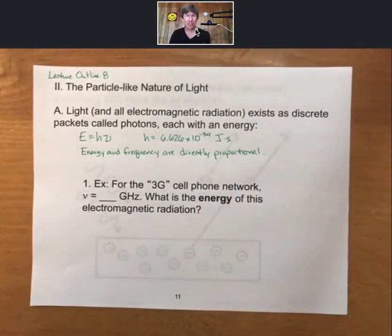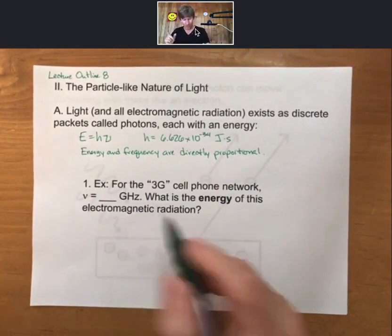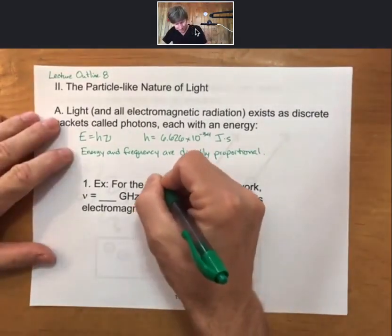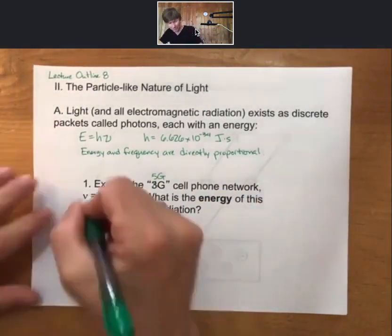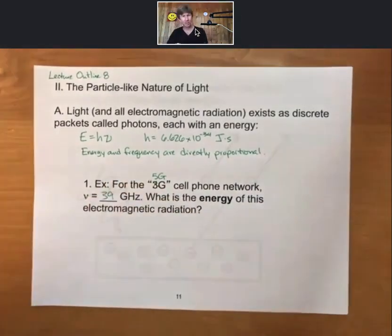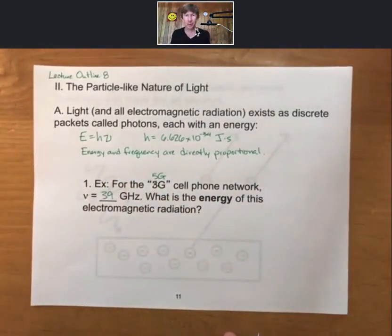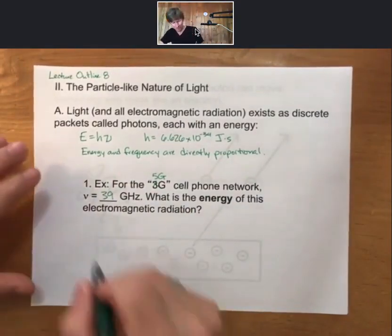As an example of a calculation you could be asked to do on the homework or an exam, this used to be the 3G way back in the day, now it's 5G. For the 5G cell phone network, frequency equals 39 gigahertz. We'll do it for the same frequency that we did in the previous video. What is the energy of this electromagnetic radiation?